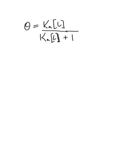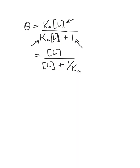Now divide every term by Ka. Dividing the top term by Ka gives L. Dividing the Ka·L term in the denominator by Ka gives L. Dividing the 1 by Ka gives 1 over Ka. So we arrive at theta equals L over L plus 1/Ka — the first equation I wrote down in class. You don't have to do the derivation on an exam, but I think derivations really help you understand where these equations come from.